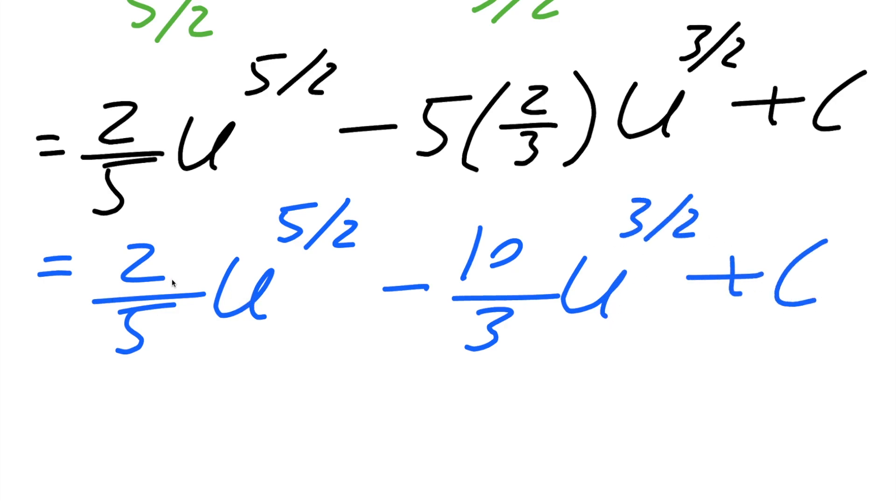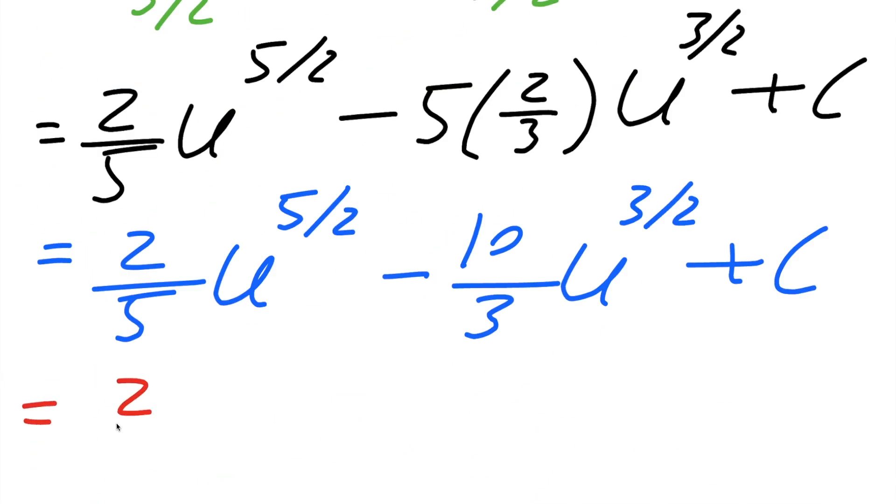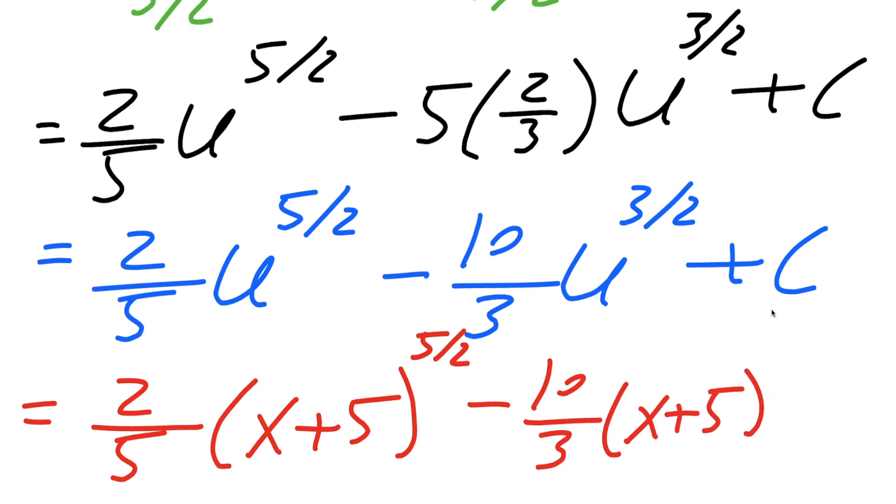Our last step is to replace u with what we said u was, and u is x plus 5. So wherever you see a u, replace it with x plus 5. And so our final answer will be 2 divided by 5u raised to 5 divided by 2 minus 10 divided by 3, parentheses x plus 5, close parentheses raised to 3 divided by 2 plus c.